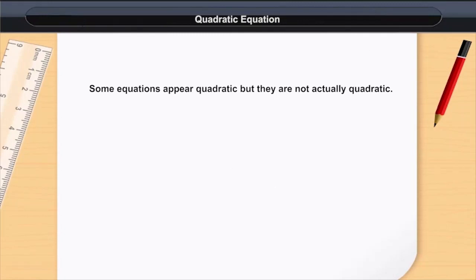Some equations appear quadratic, but they are not actually quadratic. For example: y² + 2y + 6 = y² + 4. The y² terms cancel, giving 2y + 6 = 4, then 2y + 2 = 0, which is a linear equation.